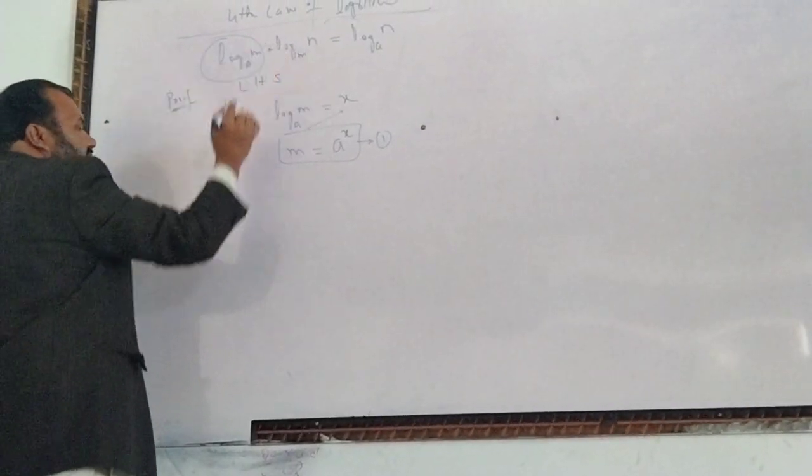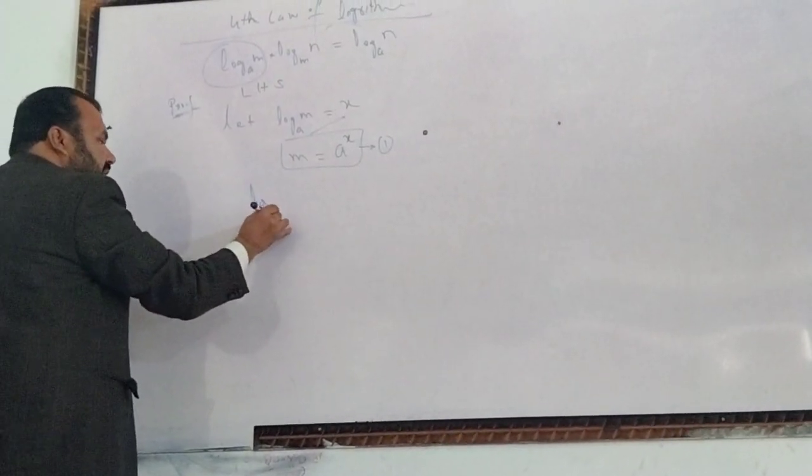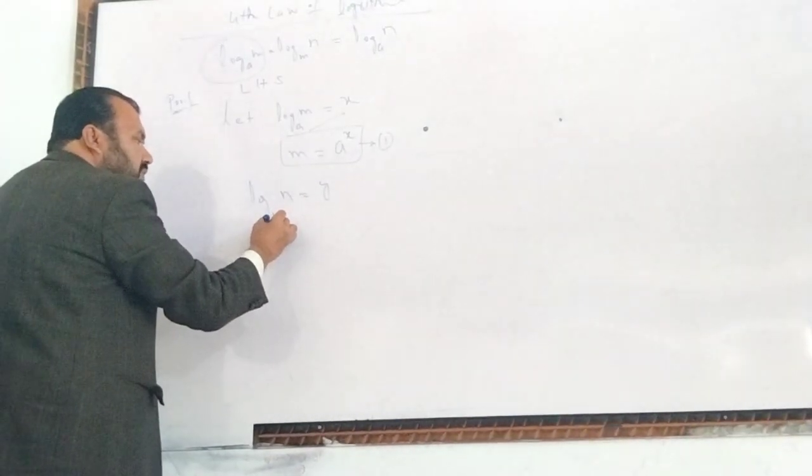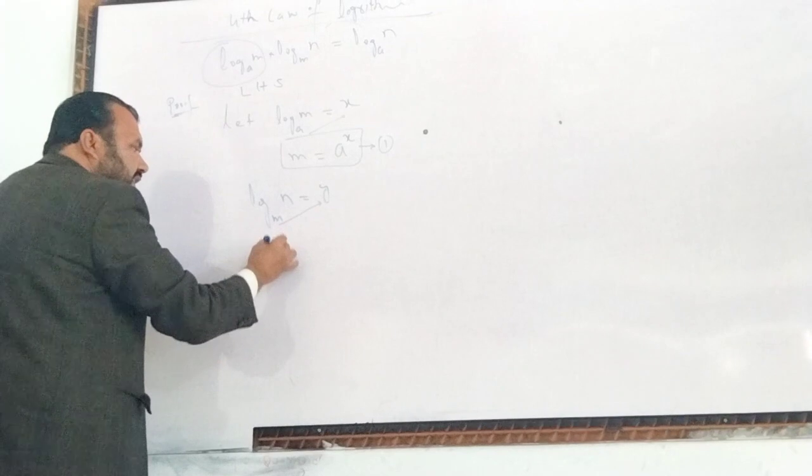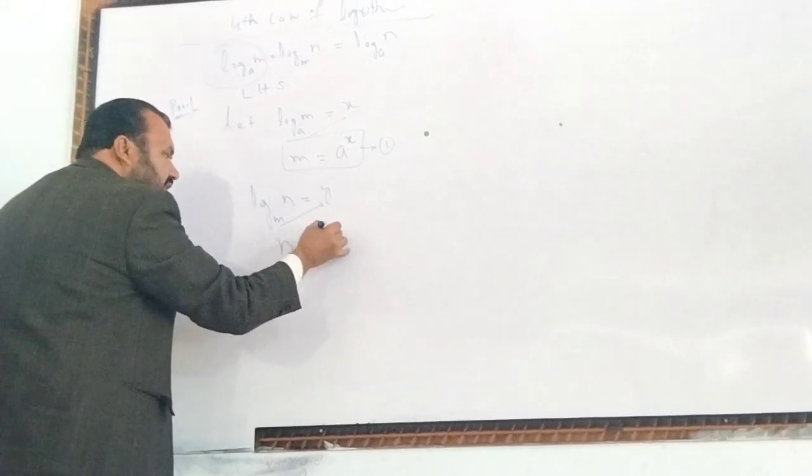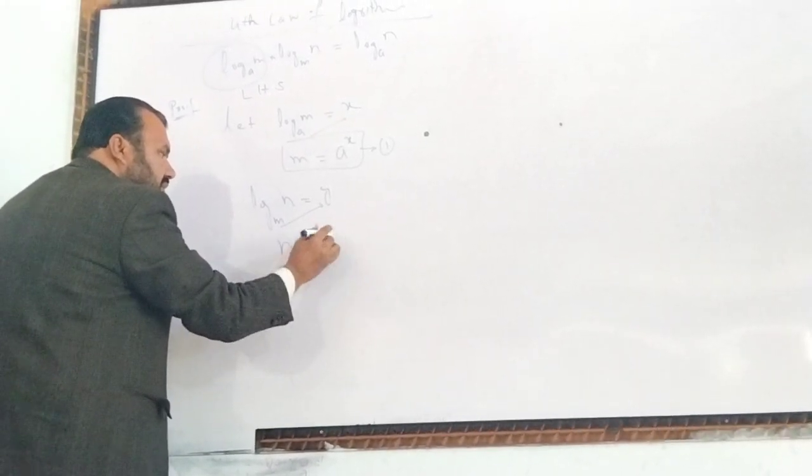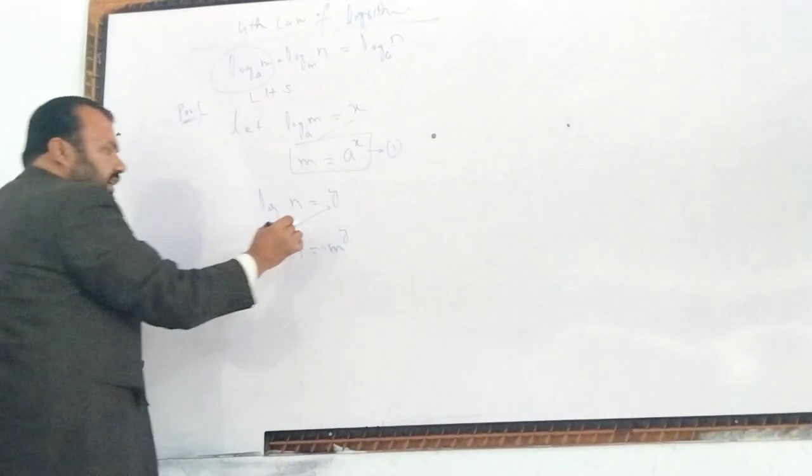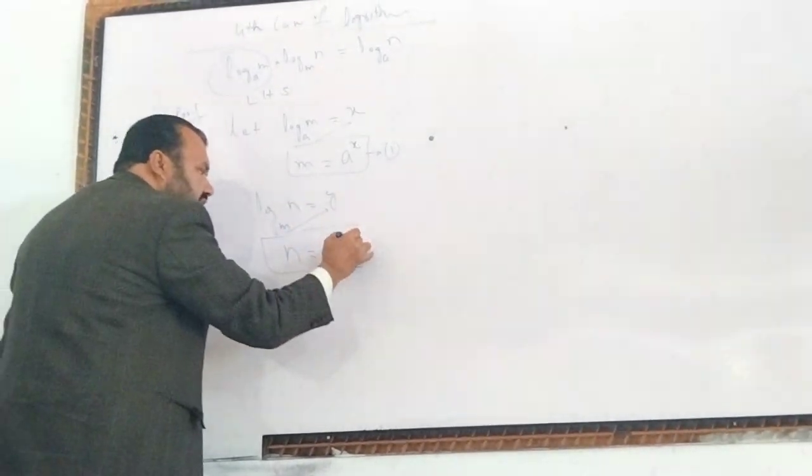It means Y is equal to, using the critical mass core. You can see the number of X is equal to Z, equation number 2.